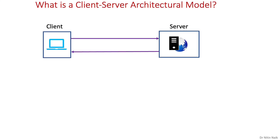First, we look at what is a client-server architectural model. Since the adoption of the World Wide Web and HTTP in the mid-1990s, the client-server architecture became the most commonly used architecture for communication and data transfer. It divides the system into two major subsystems or logical processes — client and server. The client also refers to the client process and the server also refers to the server process that may run on the same machine or on different machines.